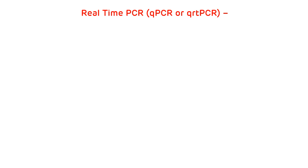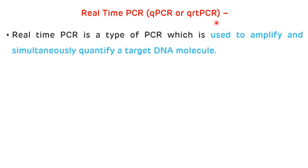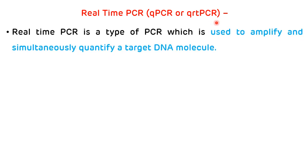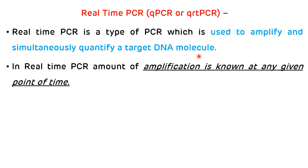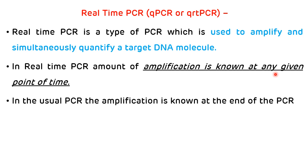The second important type of PCR is real-time PCR, also known as qPCR or qRT-PCR. Real-time PCR is a type of PCR used to amplify and simultaneously quantify a target DNA molecule. In real-time PCR, the amount of amplification is known at any given point in time, while in ordinary PCR the amplification is known only at the end of the PCR. This is the main advantage of real-time PCR.